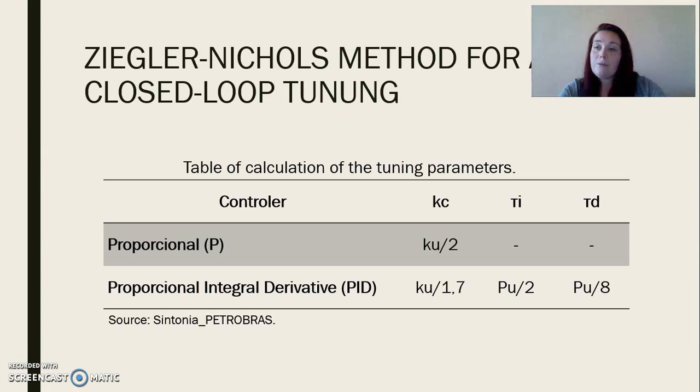The closed-loop tuning was performed by the Ziegler-Nichols method by defining the parameters Kc, tau i, and tau d for the proportional-pure and proportional-integral-derivative, according to the table presented. Thus, it is necessary to determine the ultimate gain, Ku, and the ultimate period, Pu.